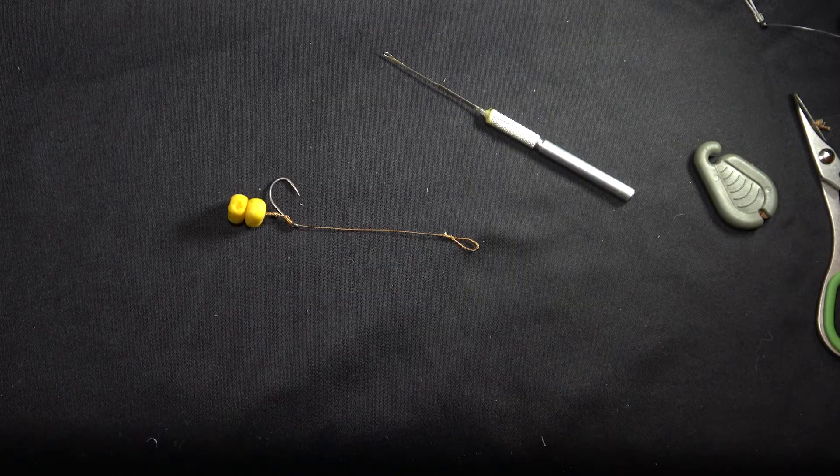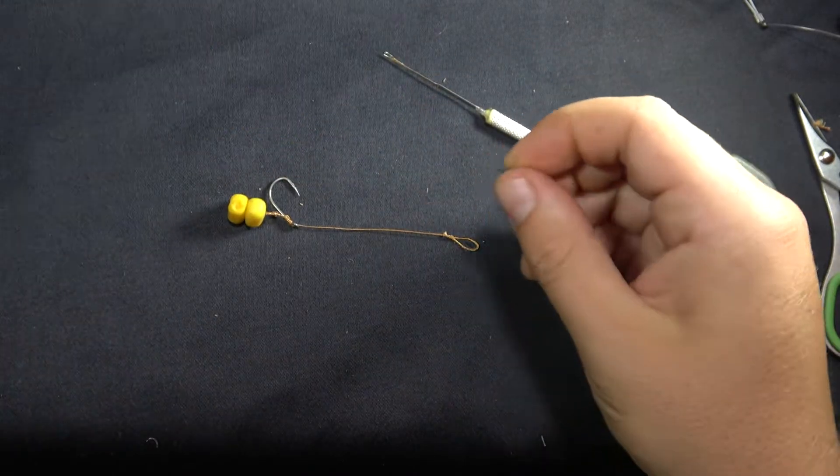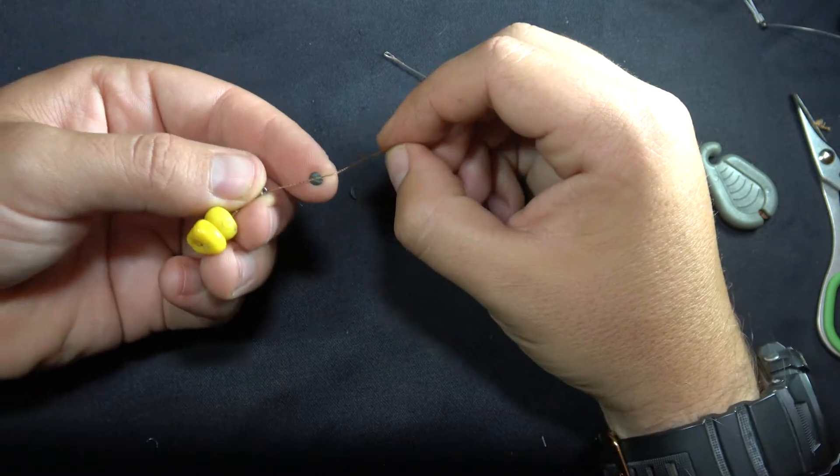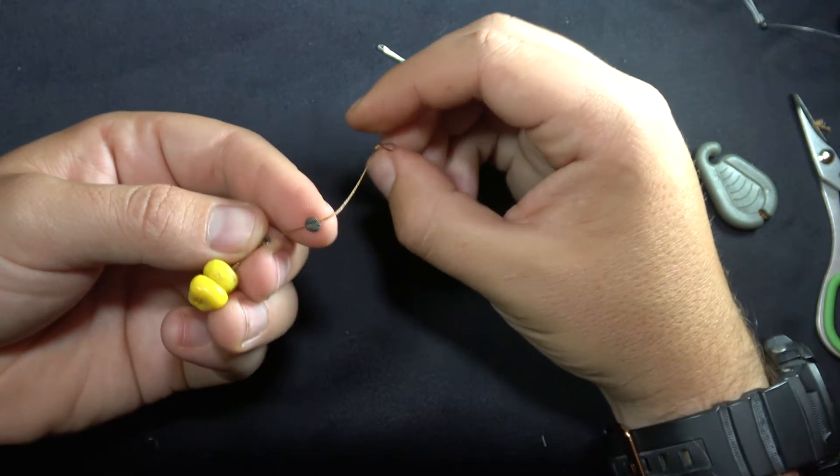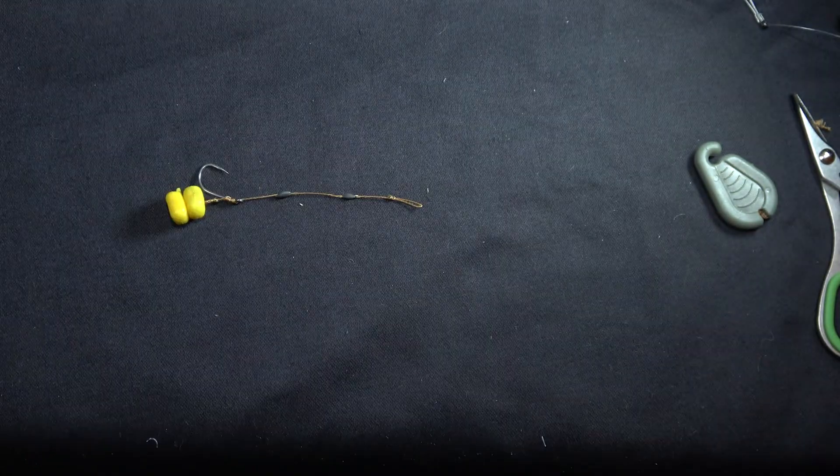Then grab your tungsten putty. Make two blobs and put them onto your hook link. This will keep your hook link from floating and will make sure the fish don't know there is a hook link there. Your hook link is now done.